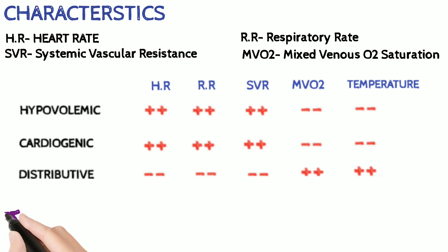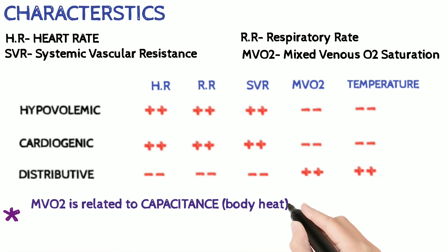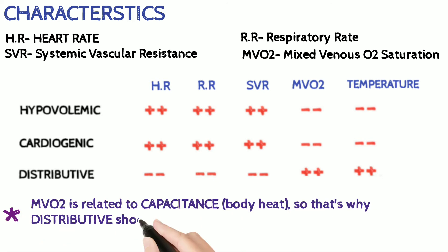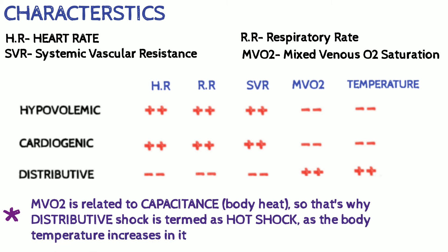Because of this increase in MVO2 and temperature, distributive shock is termed a hot shock, whereas the other two — hypovolemic and cardiogenic — are termed cold ones.